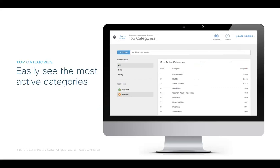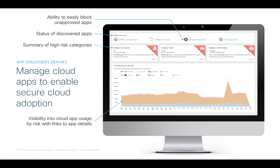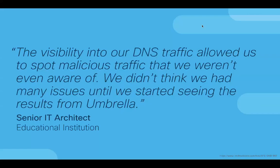With the top categories report, you can easily see the most active categories by number of requests, as well as detail on whether that request was blocked or allowed. The App Discovery Report enables you to gain visibility into the cloud apps being used in your environment and block any applications that may be unsafe, either by application name or category. This report also provides application risk insight so you can make informed decisions about which applications to allow or block depending on the level of risk. Using Umbrella's powerful reporting capabilities, one customer was able to identify malicious traffic they didn't even know existed until they had that additional visibility into all internet activity.